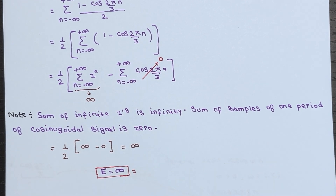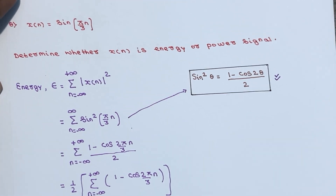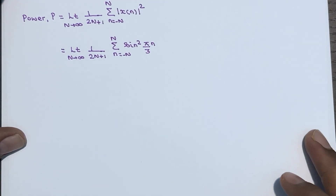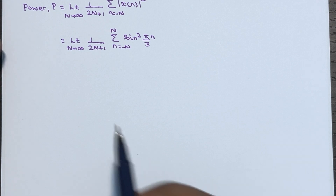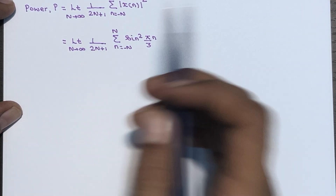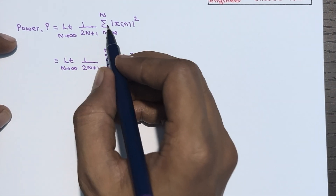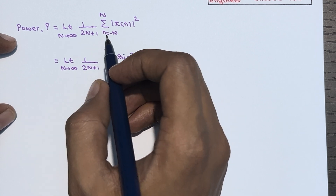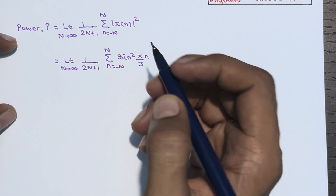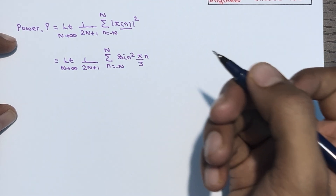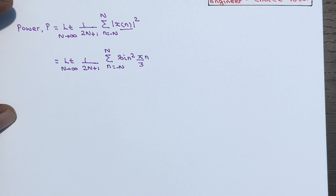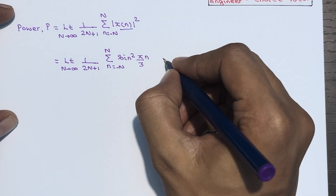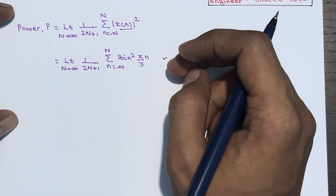Now let's calculate the average power for the discrete-time signal x(n). The average power formula is: P = limit as N→∞ of [1/(2N+1)] · summation from n = −N to +N of |x(n)|². We substitute x(n) = sin(π/3 · n) into this formula.